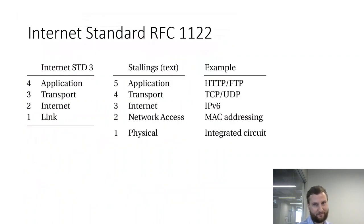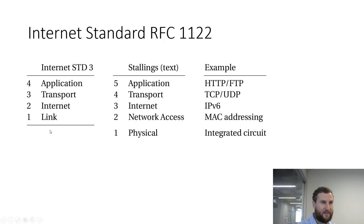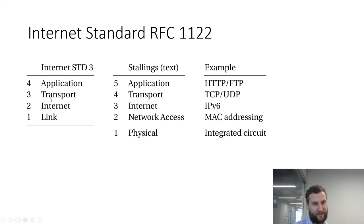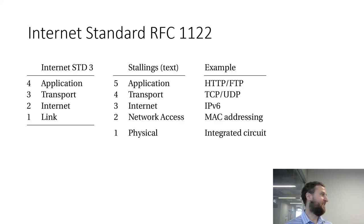The internet standard RFC 1122 has four pieces: the link layer, the internet layer, the transport layer, and the application layer. The link layer connects PCs in your home through a router or switch — not connected to the internet. Moving up to the internet layer, then the transport layer — how do we send data where it needs to go — and then the application layer at the very top. Normally we only interact with the application layer, but beneath it are all these others you need for it to work.